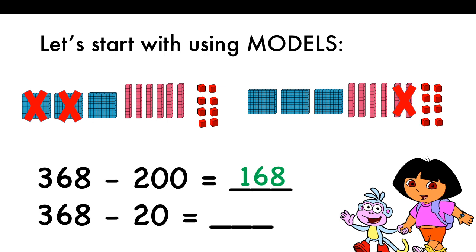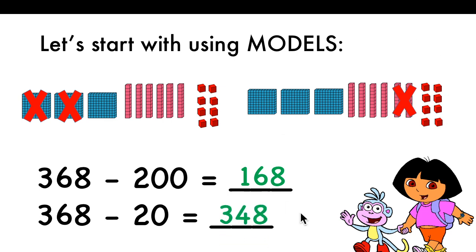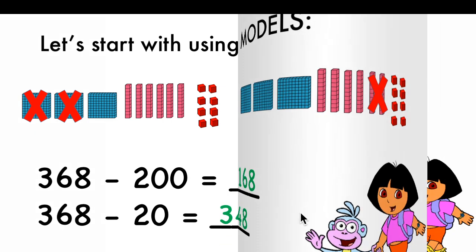6 tens will change to 4 tens only, and ones will remain the same. So the number will be 348.